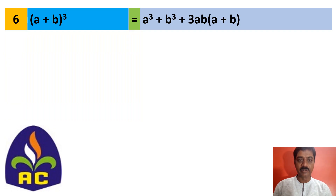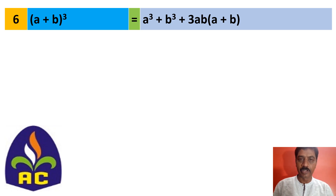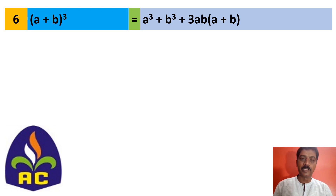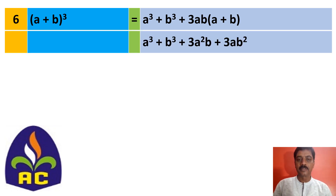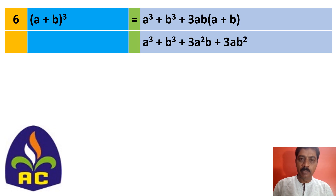Now let's go to the sixth identity: a plus b, the whole cube. You write it as a cubed plus b cubed plus 3ab into a plus b. You can expand 3ab into a plus b and open it as a cubed plus b cubed plus 3a squared b plus 3ab squared.